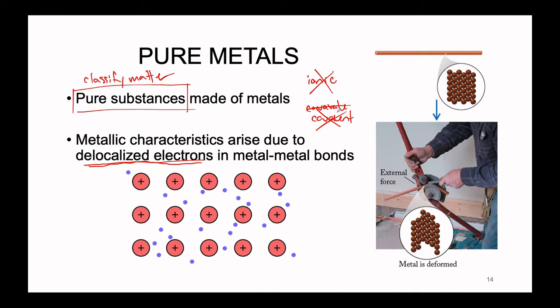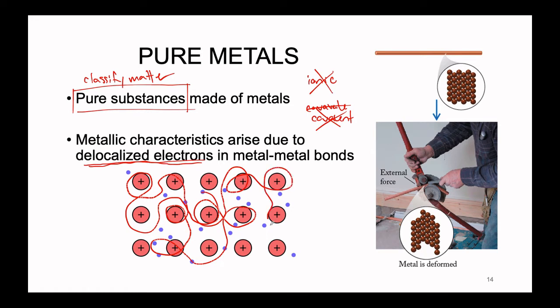In metals, the electrons end up being what we call delocalized. In other words, they are not localized to one area, but rather every electron — illustrated in this picture as these blue dots — is allowed to travel wherever it wants to. So they can float around, attracted by whatever positive center is closest, and probably repelled by a bunch of other negative electrons in the process, but they have total free range.